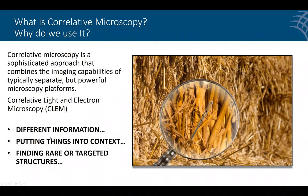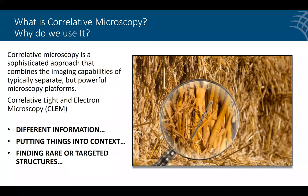The second reason for correlative microscopy is putting things in context. You may have large tissue areas that you zoom in on with the electron microscope to a very small area, and correlative microscopy lets you show exactly where in the tissue you are. The third reason is finding rarer, targeted structures. When looking at disease states — for example, the exact timing of a pathogen penetrating a cell — you can screen with light microscopy and then go in and do the EM. It's the needle-in-the-haystack approach.